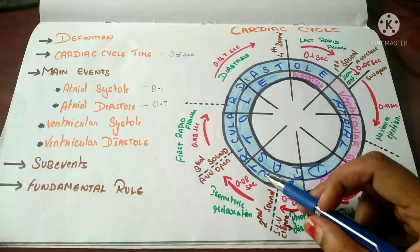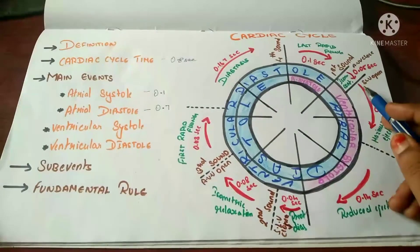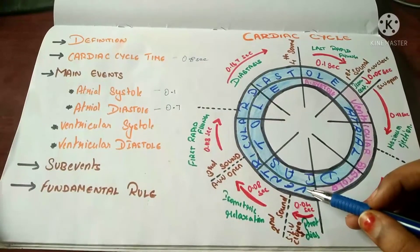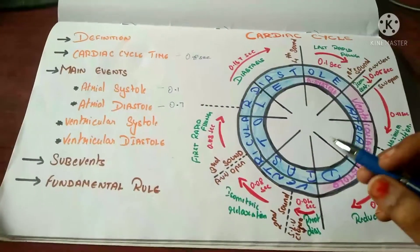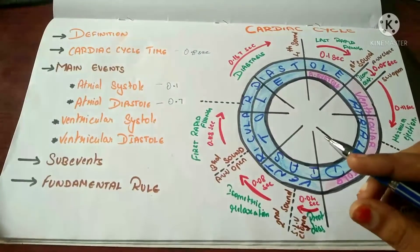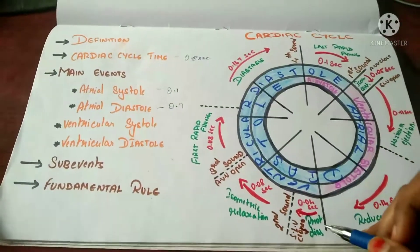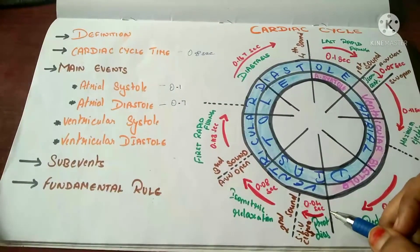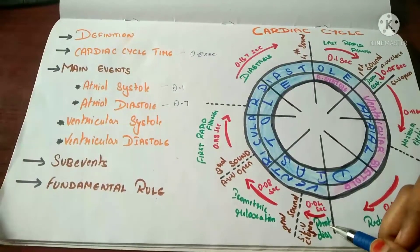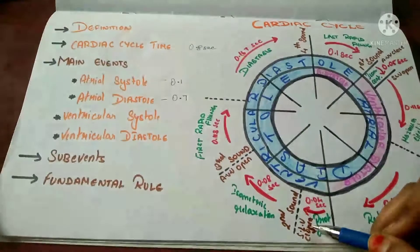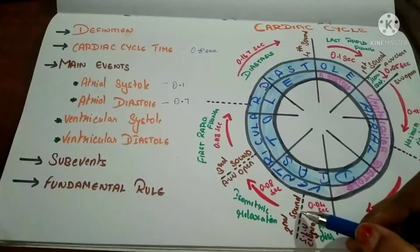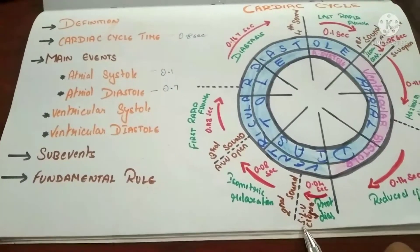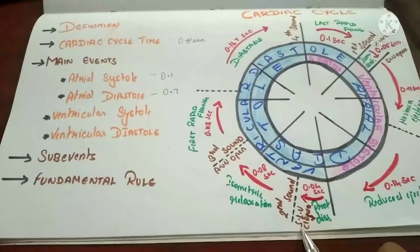After ventricular systole, ventricular diastole begins. When diastole starts, the semilunar valve which was open must now close, but it takes a small period of time to close after ventricular diastole begins. This period is known as protodiastole, lasting 0.04 second. The second heart sound is heard when the semilunar valve closes. So to summarize: the first sound is heard when the atrioventricular valve closes, and the second sound is heard when the semilunar valve closes.